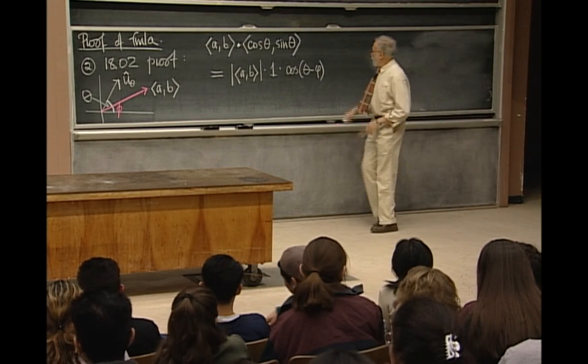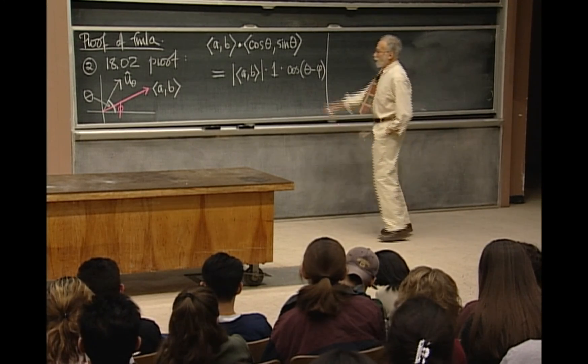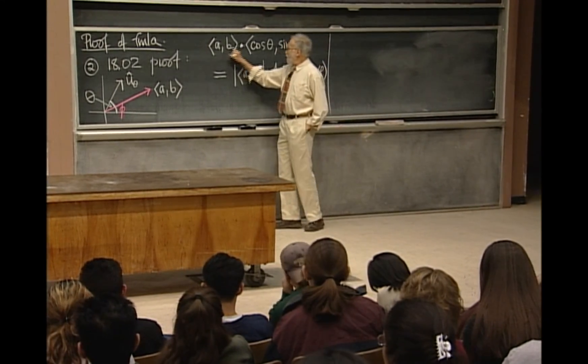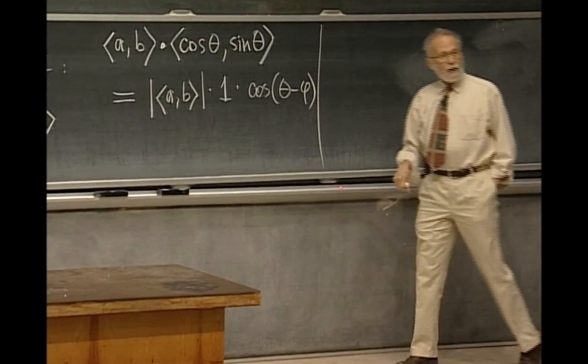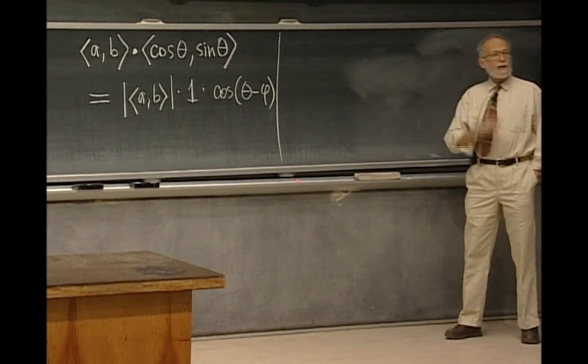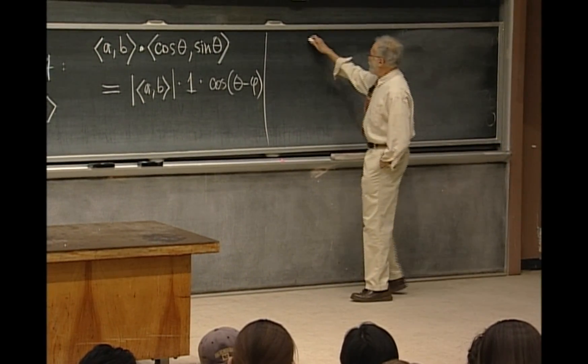The 1803 proof uses complex numbers. It says, look, take the left side. Instead of viewing it as the dot product of two vectors, there's another way. You can think of it as the part of the product of two complex numbers.